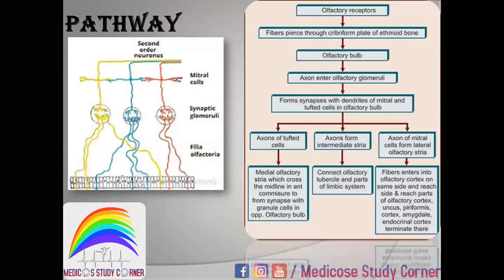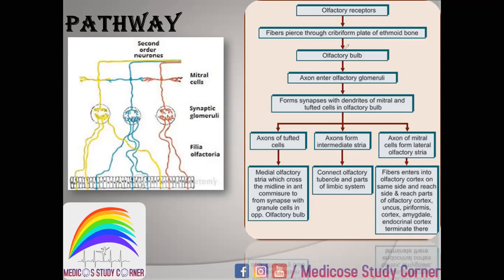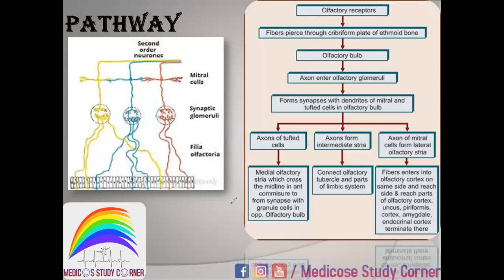Going to the olfactory bulb — these fibers are coming from the olfactory bulb and they synapse in the olfactory bulb. Here we will see the tufted cells and mitral cells. With the mitral cells and tufted cells, they go to synapse. This is the second order neuron. So the second order neuron has been given from the mitral cells and tufted cells.